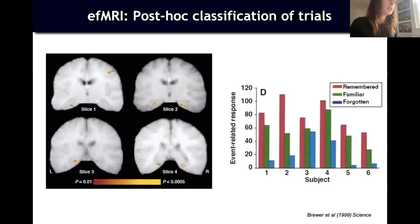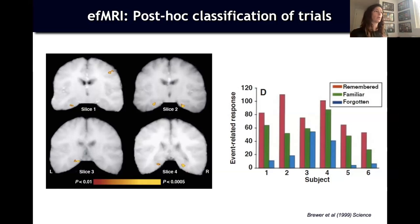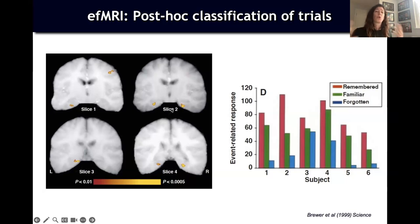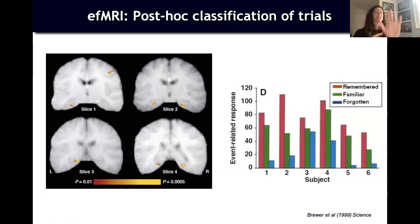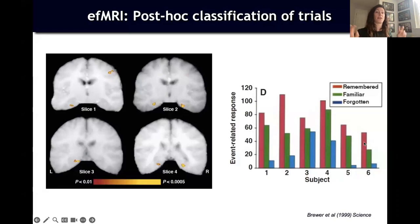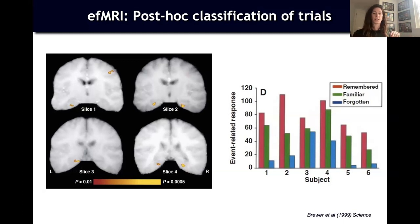Here's another example from the late 90s: if you're interested in what happens in the brain when participants remember versus forget words, you need to ask them after they come out of the scanner. You present words during scanning, then test recognition afterward — remembered, familiar, or forgotten. You could never block remembered versus non-remembered words in advance, so you need to model each stimulus separately and classify afterward.